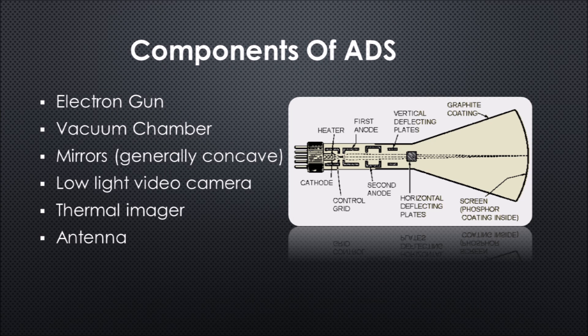ADS consists of the following components: an electron gun, a vacuum chamber, mirrors which are generally concave, a low light video camera, a thermal imager, and an antenna.